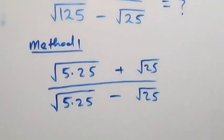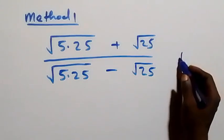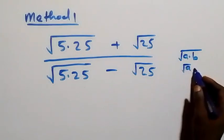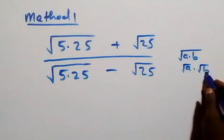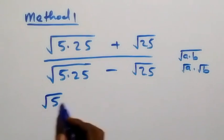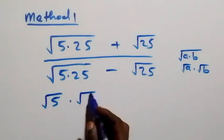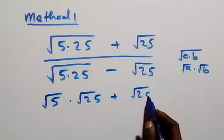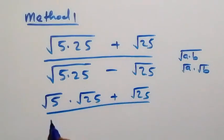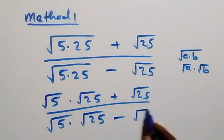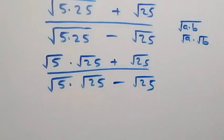Since we have root of A times B, we can separate it as root A times root B. So the numerator becomes root 5 times root 25, plus root 25, divided by root 5 times root 25, minus root 25.